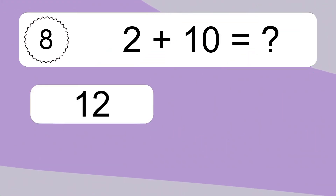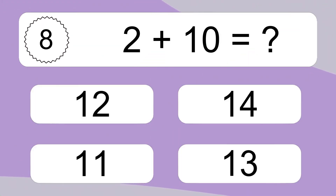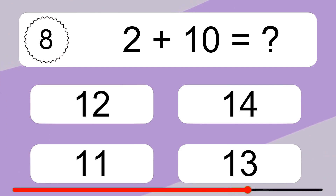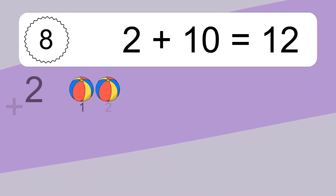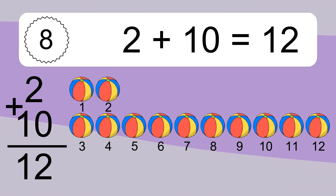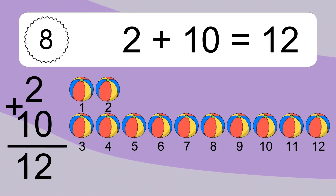2 plus 10 equals what? 2 plus 10 equals 12. Let's count it. 1, 2, 3, 4, 5, 6, 7, 8, 9, 10, 11, 12.